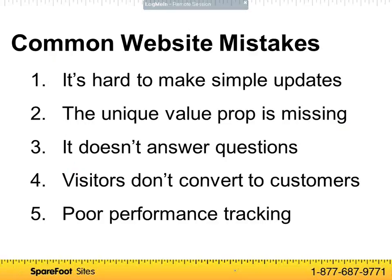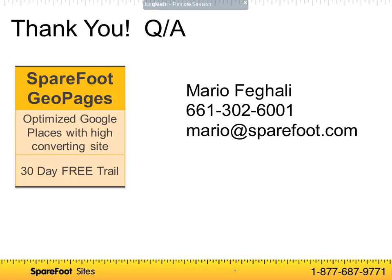To recap, we went over the five most common website mistakes and how to solve them: it's hard to make simple updates, unique value proposition is missing, the site doesn't answer questions, visitors don't convert into customers, and poor performance tracking. I appreciate you taking the time to listen today and I hope this was informative. I'm now going to open it up to Q&A. We're also doing a 30-day free trial of one of our new products to help visitors convert into tenants through Google Places listings. Feel free to email me at mario@sparefoot.com.